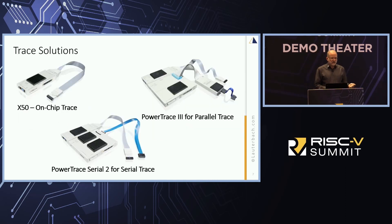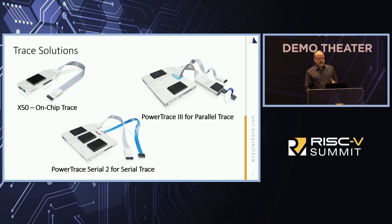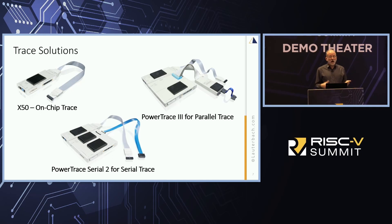Next I'm going to talk about trace. I mentioned the X50 — if you have on-chip trace, that's all the hardware you need; you can go fetch the information in those trace buffers and use our software with that. Over here we have the PowerTrace 3 — if you have parallel trace, that's most of what I see in implementations. That's kind of a mid-to-high performance interface. And then between the two we have the PowerTrace Serial — if you have very high-performance systems with a lot of data to collect, you'll be looking at the PowerTrace Serial.